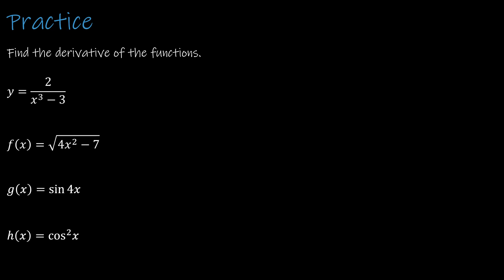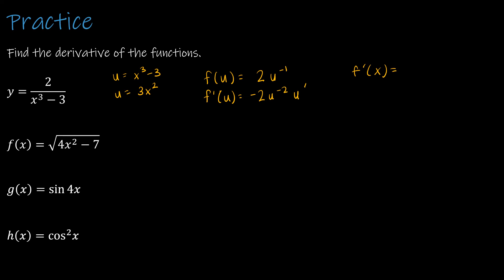For the first question, y = 2/(x³-3): u = x³-3, u' = 3x², and f(u) = 2u⁻¹, so f'(u) = -2u⁻² · u'. Therefore y' = -2(x³-3)⁻² · 3x², which means the numerator is -6x² over (x³-3)².